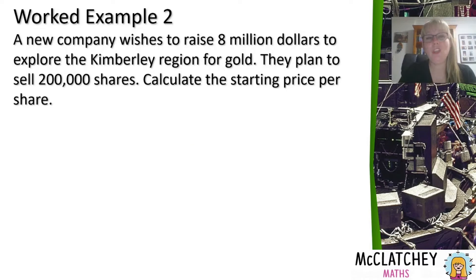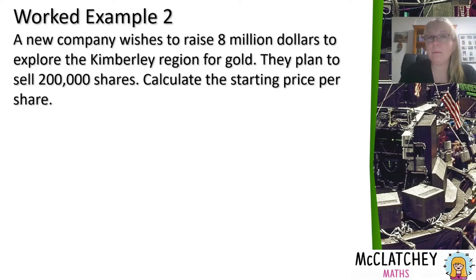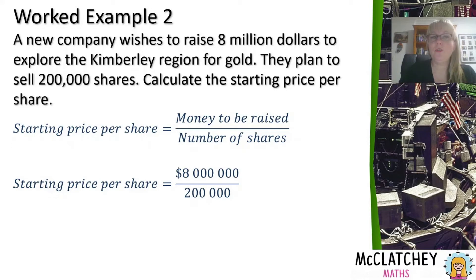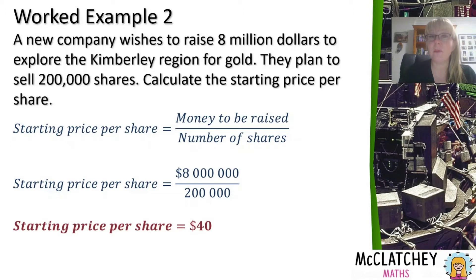In our second worked example, a new company wishes to raise $8 million to explore the Kimberley region for gold. They plan to sell 200,000 shares — calculate the starting price per share. Companies typically do this when starting up to raise money. The starting price per share equals the total amount to be raised divided by the number of shares to be issued. Substituting $8 million divided by 200,000 — remembering a million has six zeros — gives a starting price per share of $40.